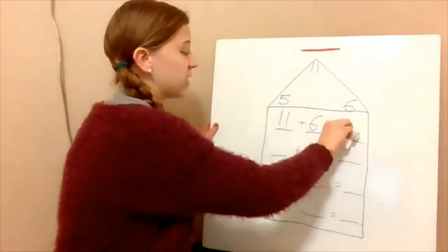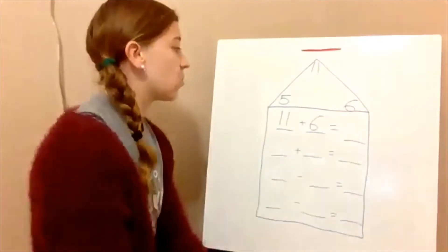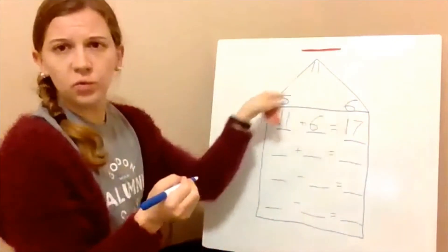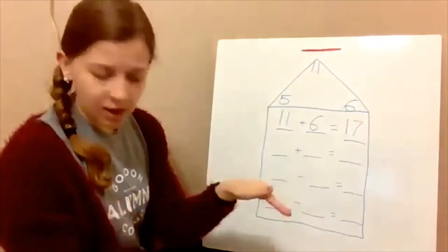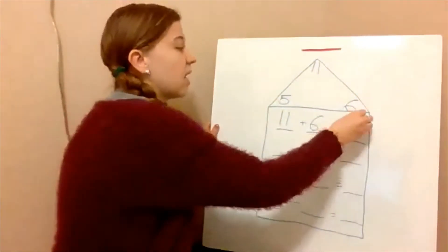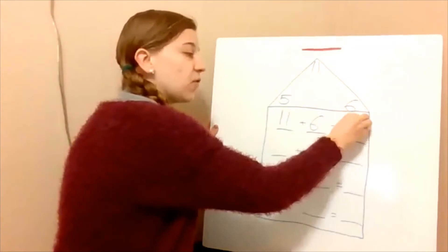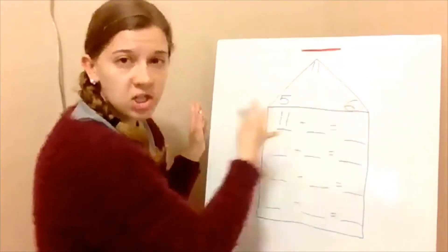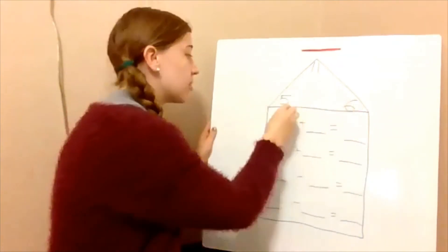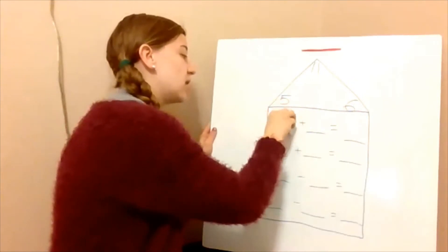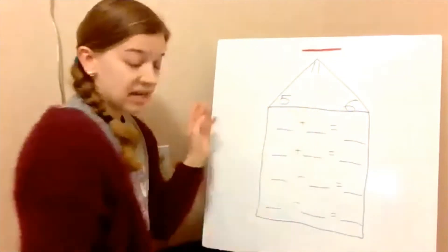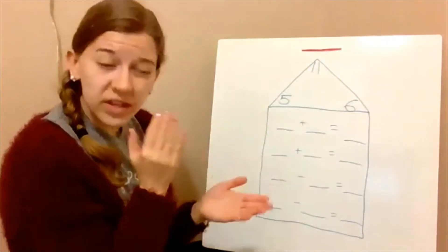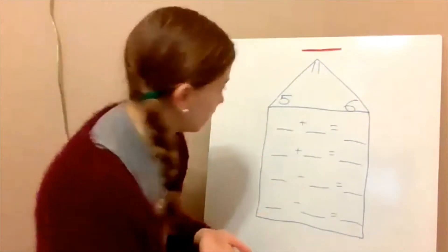I can't say eleven plus six equals seventeen, because seventeen isn't in the roof — that's not part of this family. So you have to be very careful about where each number goes. You have to check to make sure each equation actually makes sense and uses only the three family numbers.